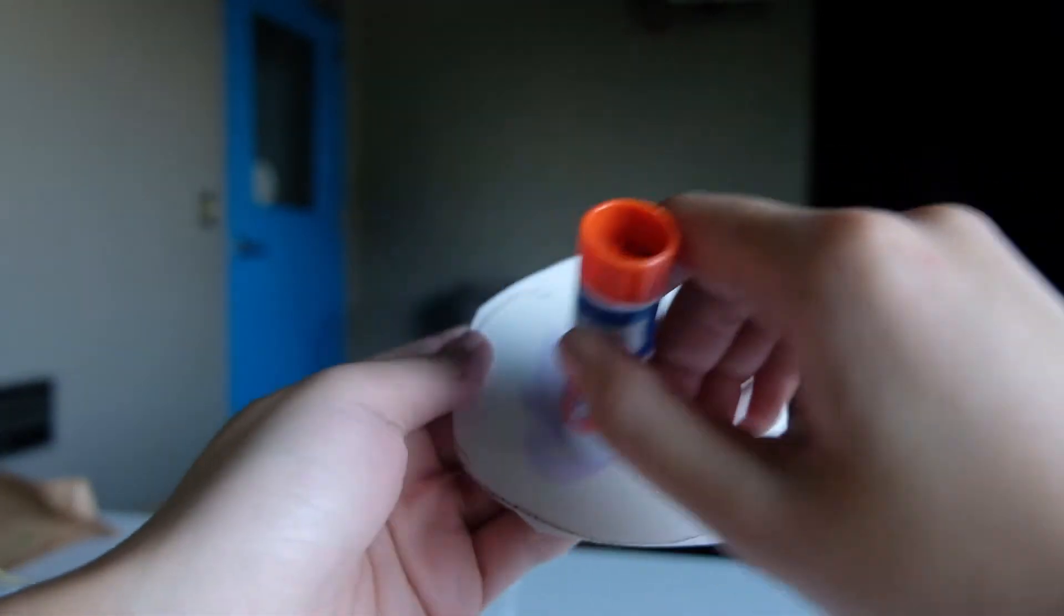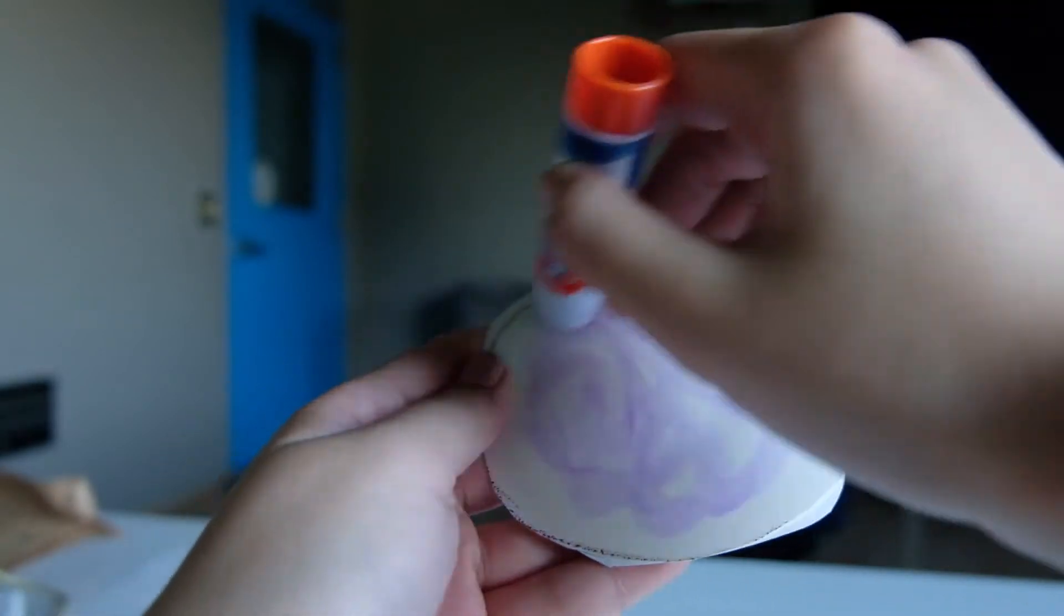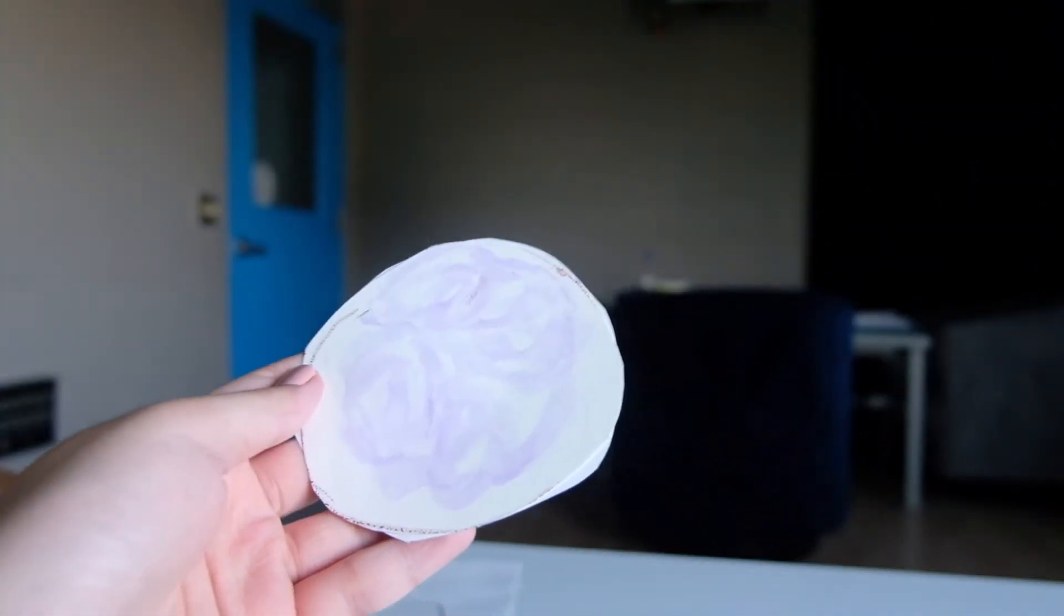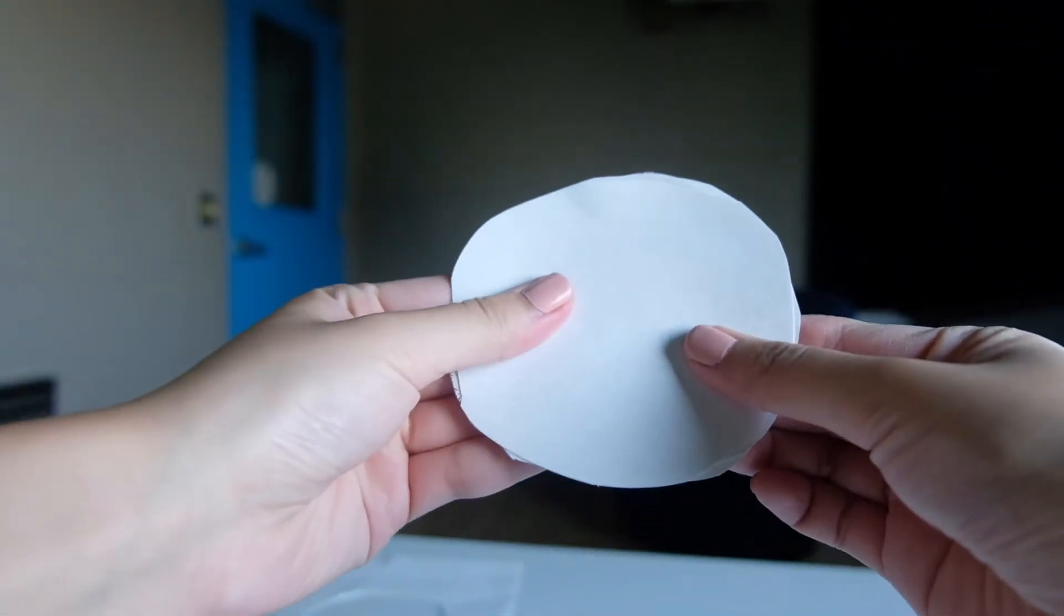And then you do the same thing on the other side. Use your glue stick and put glue on that side. Then grab your other white circle and glue it all together.